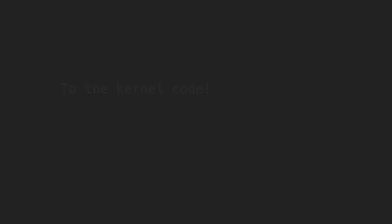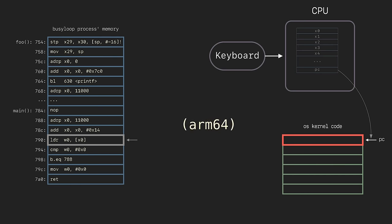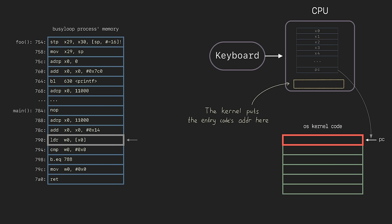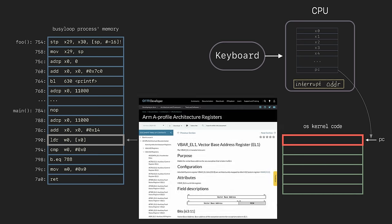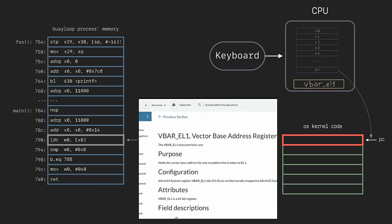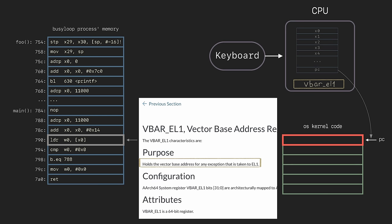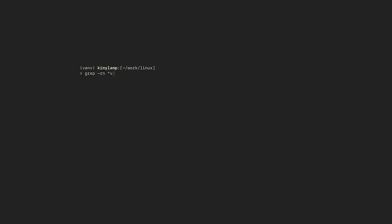Now to the fun part. Let's trace the whole mechanism in the kernel code for ARM64. We will try to find the implementation of that part: when the interrupt arrives, how does the CPU know where to jump? It works like this — the CPU has a special register. It says: dear operating system, put the address of your interrupt handling code into that register, and when the interrupt arrives, I will jump directly there. In ARM64, such a register is called vbar_el1, and it holds the vector base address for any exception that is taken to EL1. EL1 means kernel space. Let's try to find it in the kernel code.